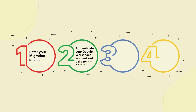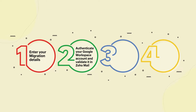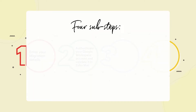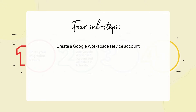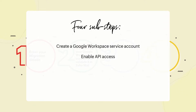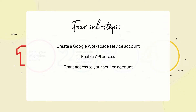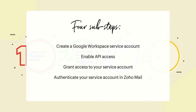Step 2: Authenticate your Google Workspace account and validate it in Zoho Mail. You can do this part in four sub-steps: create a Google Workspace service account for this migration, enable API access for that account, grant access to your service account, and finally authenticate your service account in Zoho Mail.